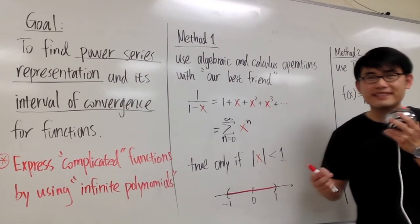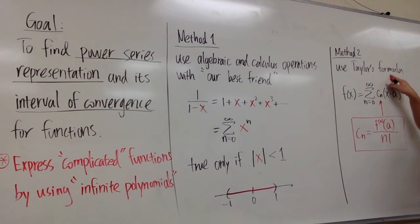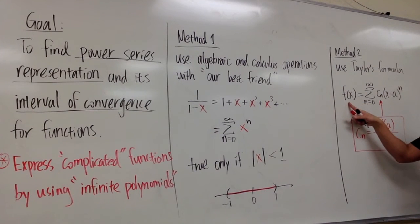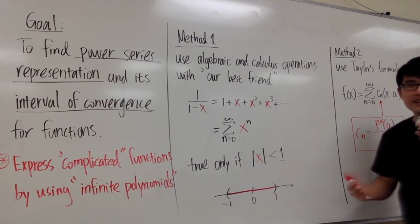Our second method is to use the Taylor's formula, which is this. If we want to write a function in terms of its power series, centered at a, that's why we have the x minus a to the nth power, and then with the sigma notation, cn are the coefficients of the polynomials. And we know that by the formula, cn is equal to the nth derivative of f, when you plug in a, and then we divide it by n factorial. That will give you the coefficients.